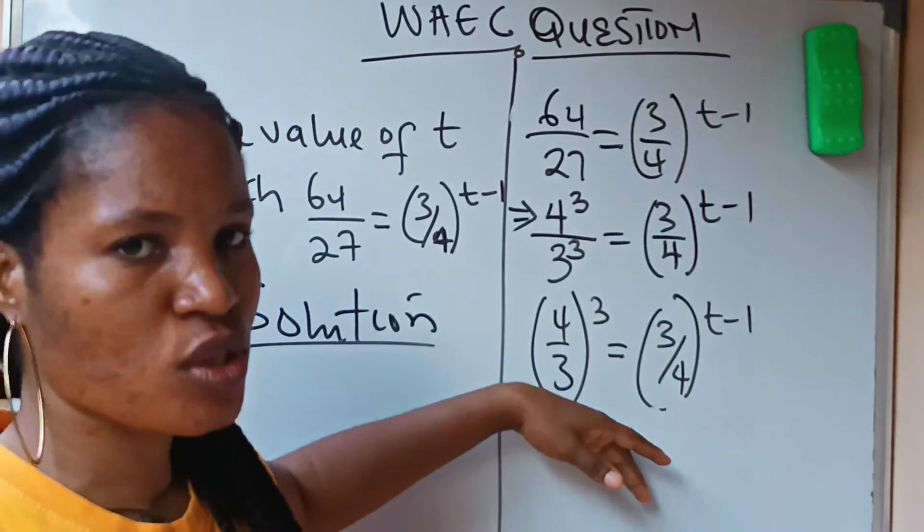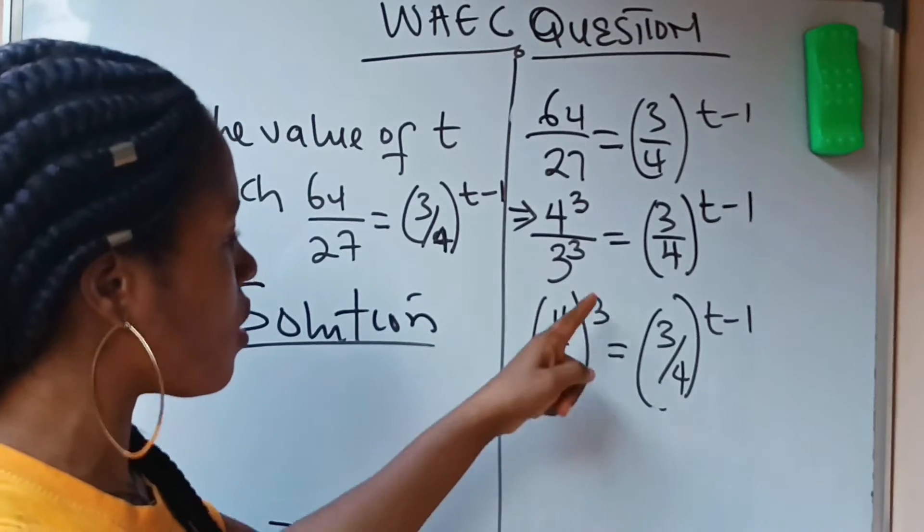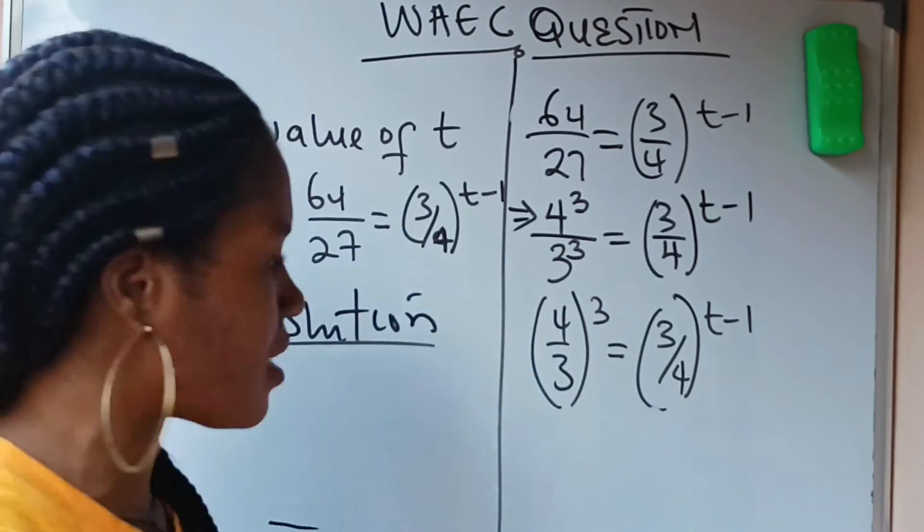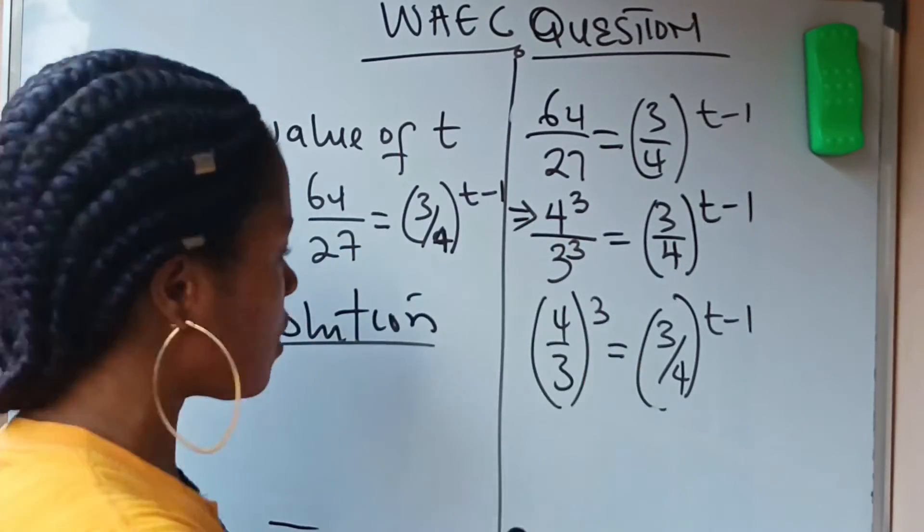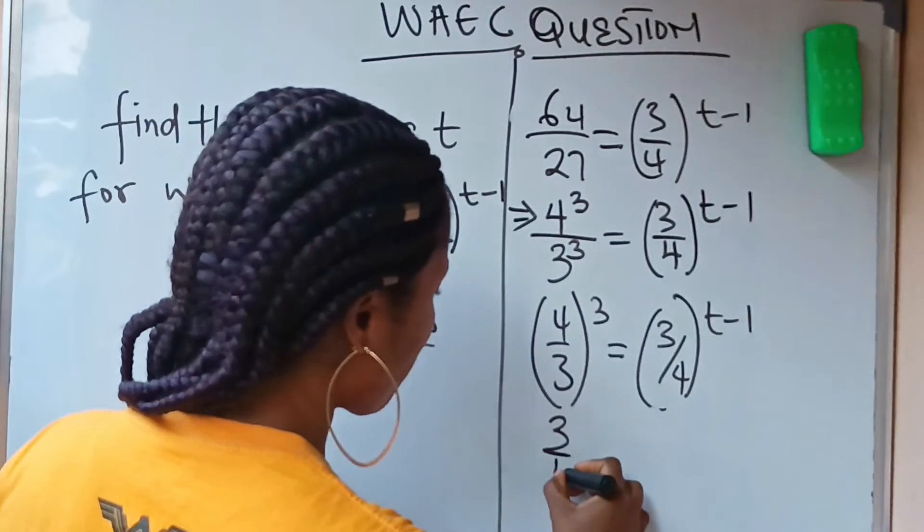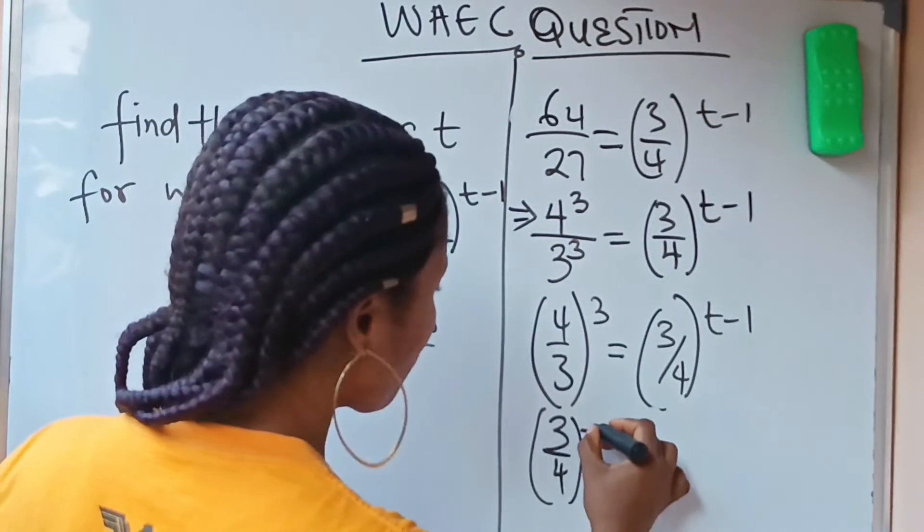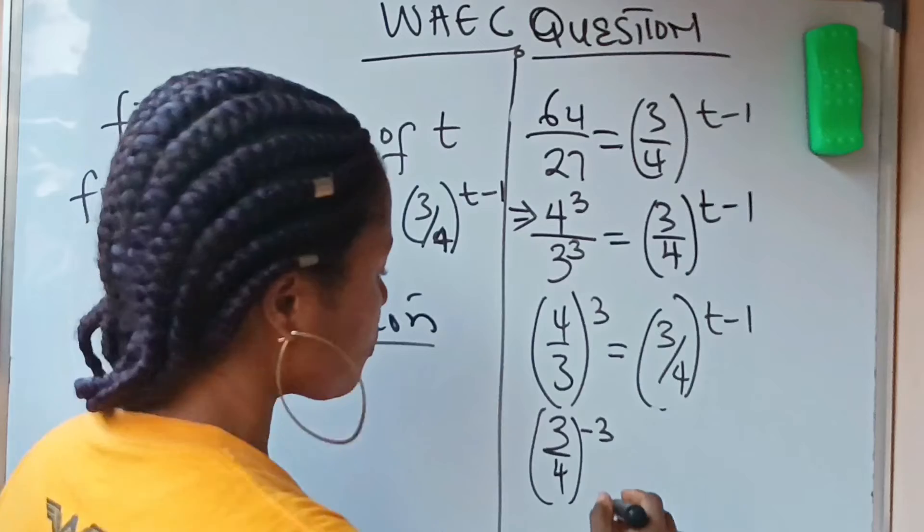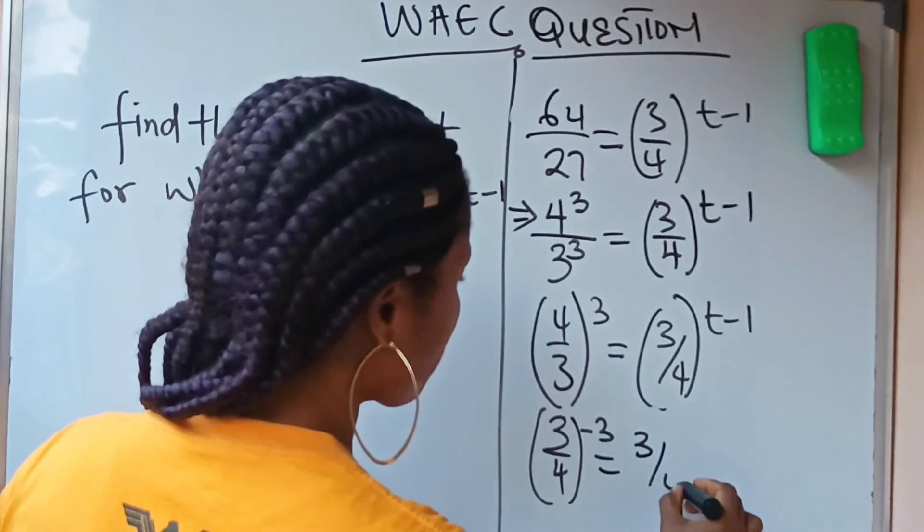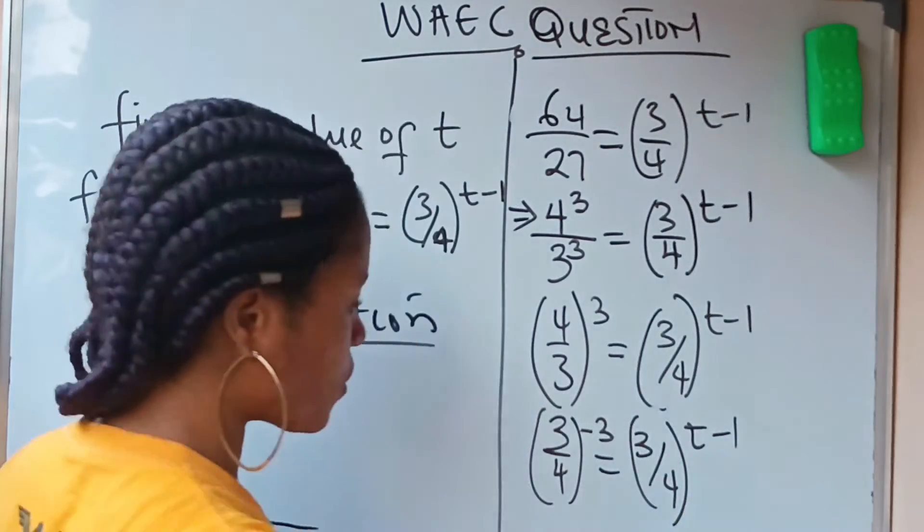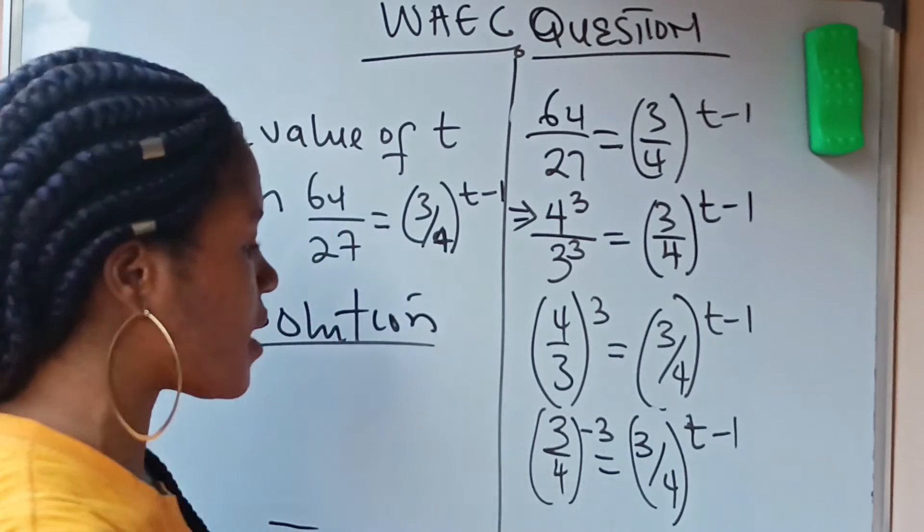Looking at this, I want them to look alike. How do we do that? 4 over 3 raised to the power of 3 can be written as, if I should invert it, if I should write 3 over 4, it will now become raised to the power of minus 3, is equal to 3 over 4 raised to the power of t minus 1.